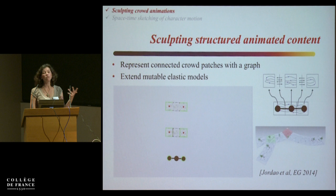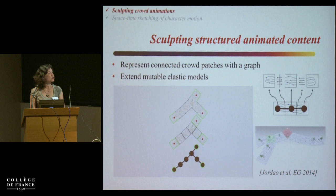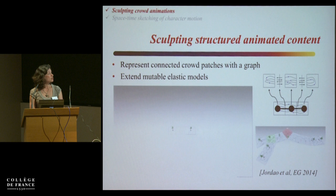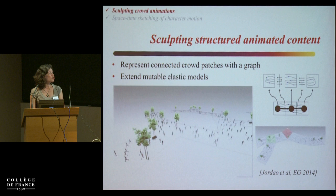The idea is to represent the connected crowd patches as a graph and extend the mutable elastic model. While you are extending these crowd patches, other patches or corners are inserted depending on the motion you do. The animation can be running while you are doing the interaction. So this is a populated street, and you can copy, paste, remove a little part, put it with the rest, cut and fully shape — for instance, an animated village with a number of streets.